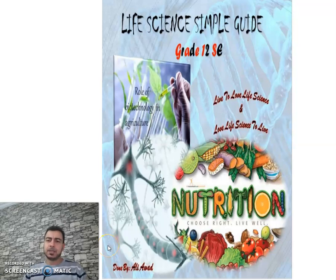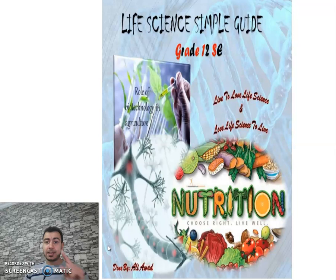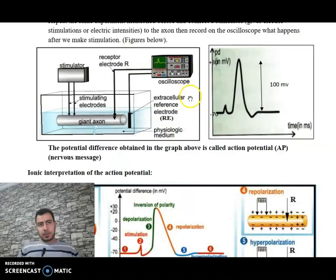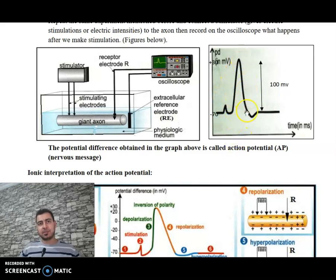Hello dear students. Today our lesson is about the nature and propagation of the nervous message — specifically the characteristics of a nervous message at the level of a nerve fiber. We are going to discuss a very important experiment about the law of all-or-none in a nerve fiber. In the previous video, we explained the meaning of action potential, its phases: depolarization, repolarization, hyperpolarization, and what happens during each phase.